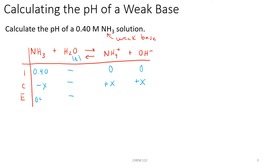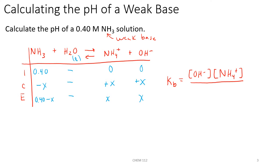So our equilibrium line for NH3 will be 0.40 minus x, and for ammonium and hydroxide it'll each be x. Next we write our equilibrium expression. We're going to use the base ionization constant Kb, equal to the hydroxide ion concentration times the ammonium ion concentration — those are our products — over our reactants, which will just be the ammonia concentration because we do not include water. Now we need to look up on our chart what the Kb is for NH3.